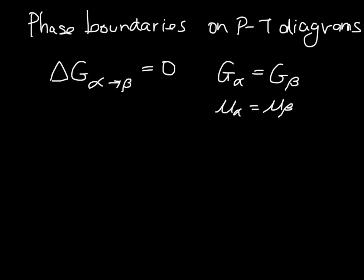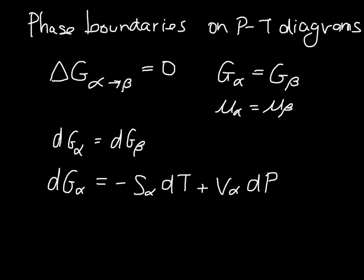If we have only small changes in T and P, then we can consider what DG is, and DG alpha has to be equal to DG beta. We can write that change in G in terms of changes in the temperature and the pressure. The temperature and the pressure are changing, and the way that affects G is related to the entropy and the volume of that phase.